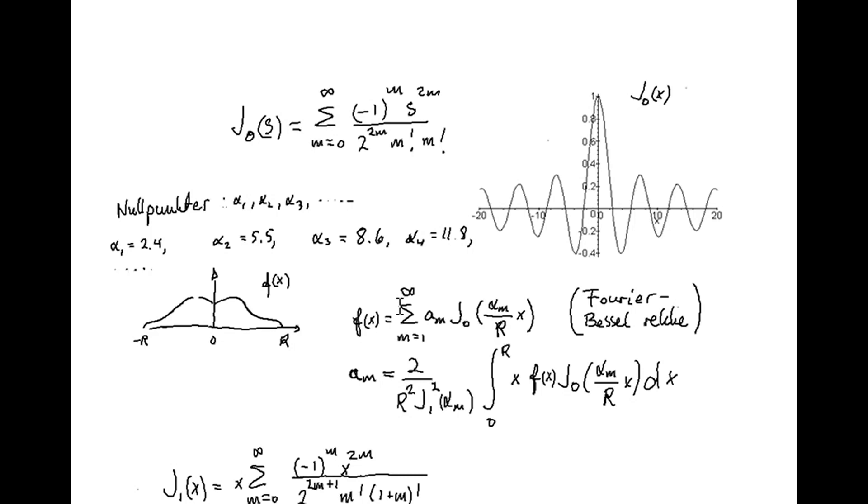And these coefficients, a_m, are described as follows. It's some constant where we have J1 square of alpha_m. Alpha_m is the m-th zero of this J0 function, this Bessel function. And it can be written as follows. It takes this form, this function.